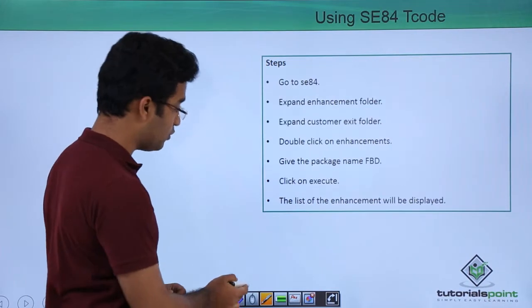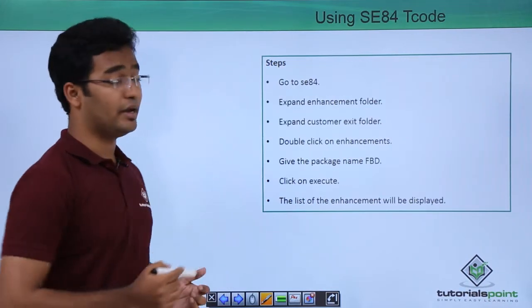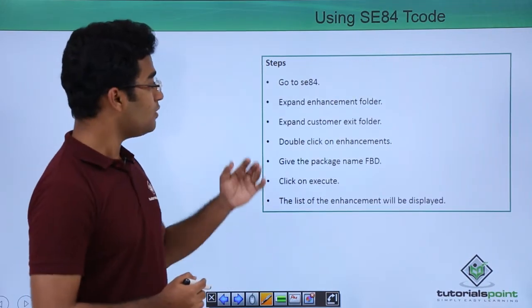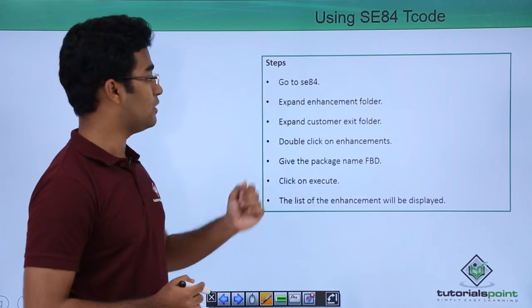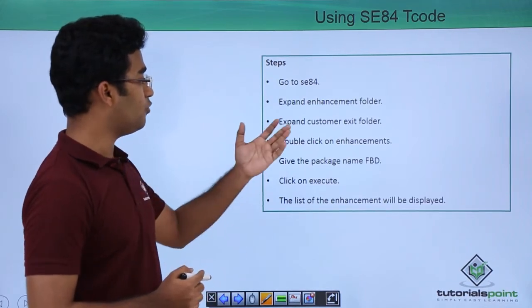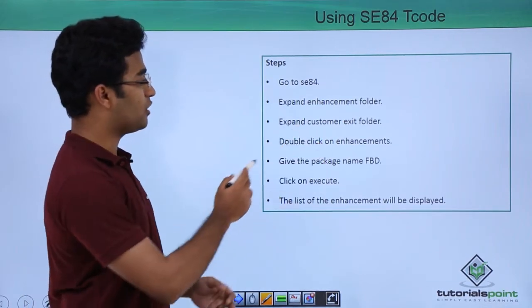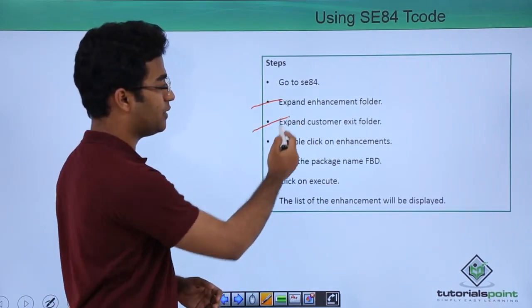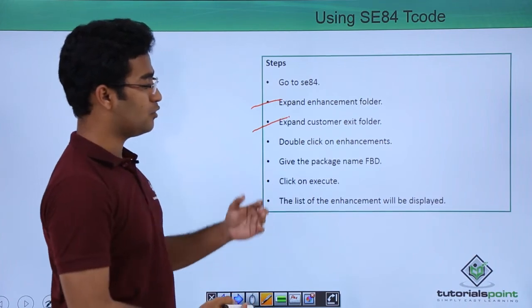The third method is using SE84 transaction code. Here we have to go to SE84, expand the Enhancement folder, then expand the Customer Exit folder.